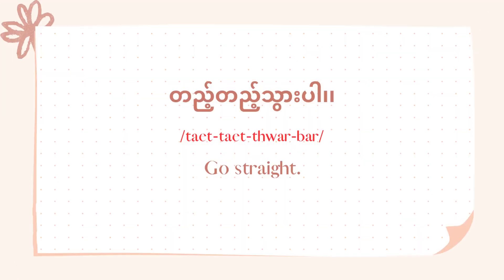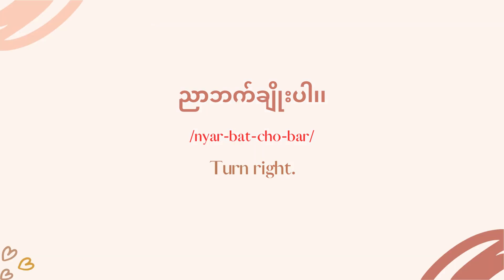Now for giving directions. If you want to say 'go straight', we say: Tete Toa Ba. Tete means straight, Toa means to go, and Ba is the polite ending particle. So 'Tete Toa Ba' means 'go straight'. Then for 'turn right' we say: Nya Ba Chuba.